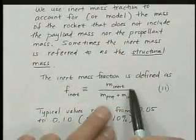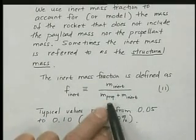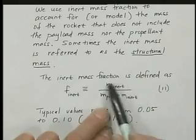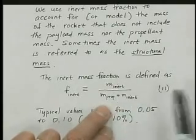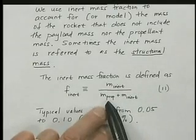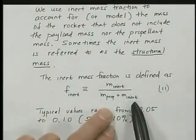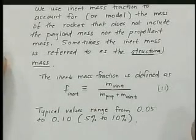And so the ratio of this inert mass, which is usually structure, to propellant plus inert, notice that payload is nowhere in this equation. We take the payload off and just look at inert mass structure, more or less, divided by prop mass plus inert mass.